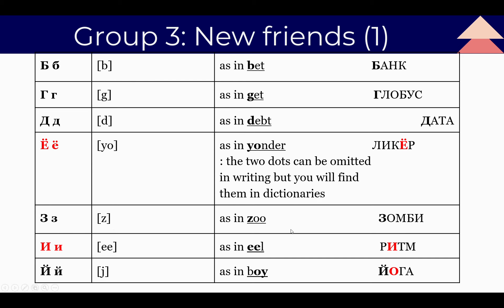The next letter is З — sounds 'Z,' as in 'zoo.' The Russian word: З, О, М, Б, И — Зомби. Zombie! Yes.